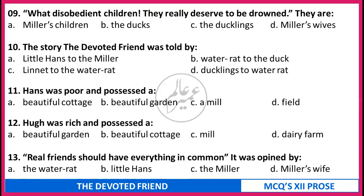Hans was poor and possessed (a) a beautiful cottage, (b) a beautiful garden, (c) a mill, (d) a field. The Miller was rich and possessed (a) a beautiful garden, (b) beautiful cottage, (c) mill, (d) dairy farm. 'Real friends should have everything in common' - it was opined by (a) The Waterrat, (b) The Little Hans, (c) The Miller, (d) The Miller's Wife. Pause the video and resume to check. Correct answers: Ninth - The Ducklings. Ten - Linnet to The Waterrat. Eleventh - beautiful garden. Twelfth - mill. Thirteenth - The Miller.